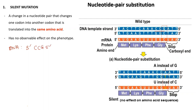During transcription, the CCG DNA template produces an mRNA codon that reads 5' GGC 3'. During translation, this codon produces the amino acid glycine.